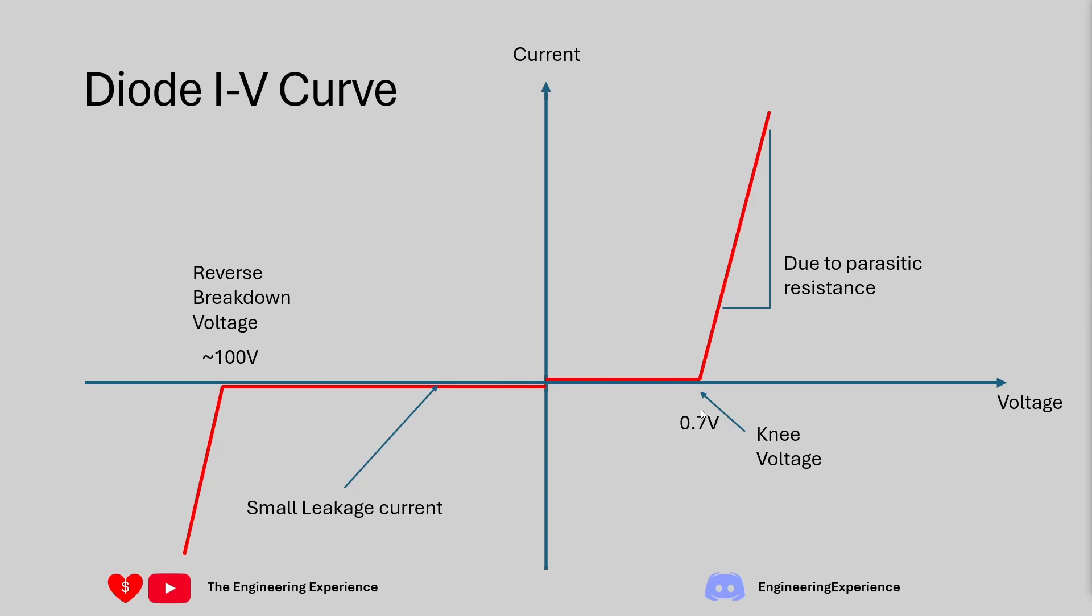So a typical diode will turn on or start conducting a lot of current after 0.7 volts. The value is smaller depending on the type of diode so if you've got a Schottky diode then it might be 0.4 volts as well. Now this point over here that I'm pointing to with the words knee voltage is the cut-in or the threshold voltage and this is the minimum voltage required to turn the diode on and allow a significant amount of current.